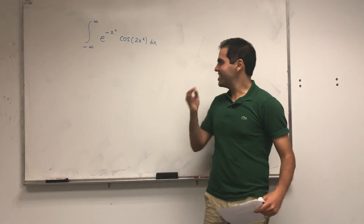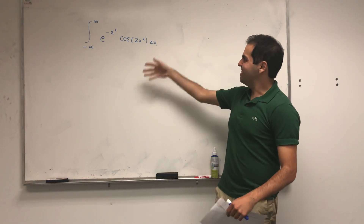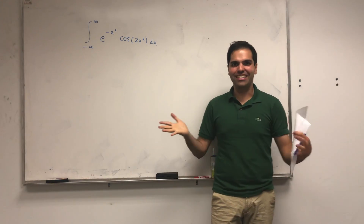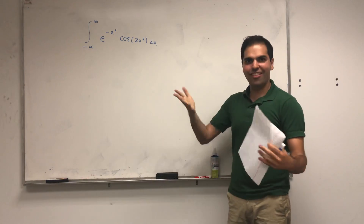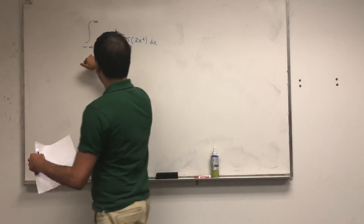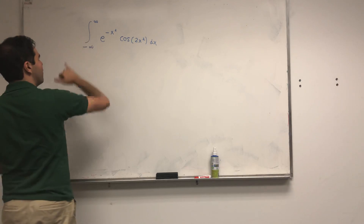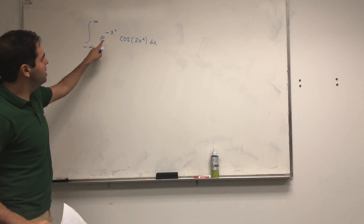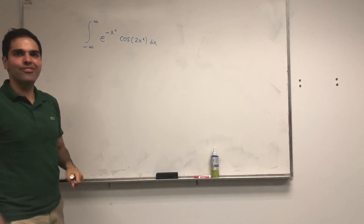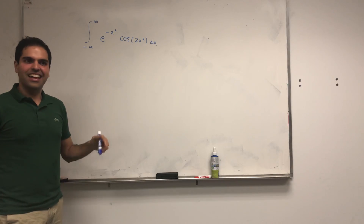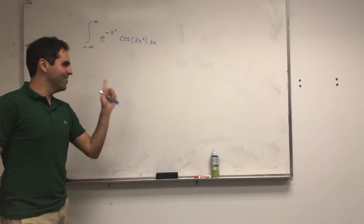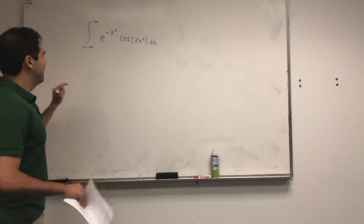All right, thanks for watching. Since I really like this polar coordinates trick, I want to show you another application of it. Today we're going to evaluate the integral from minus infinity to infinity of e to the minus x squared cosine of 2x squared dx, and you'll see there will be a golden rule — whatever that means.